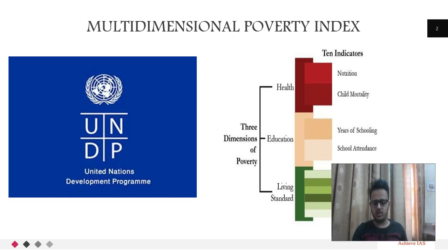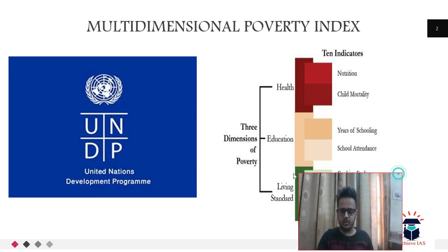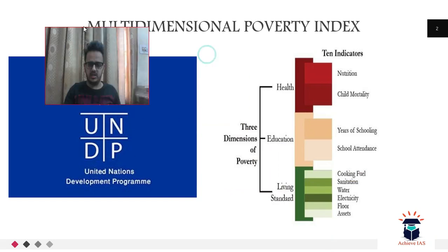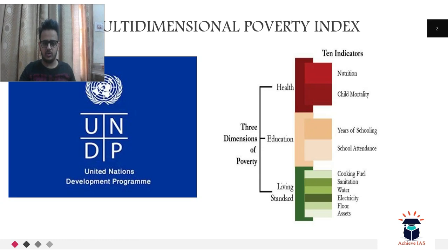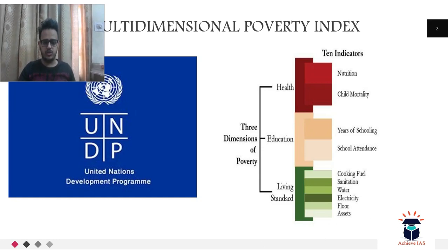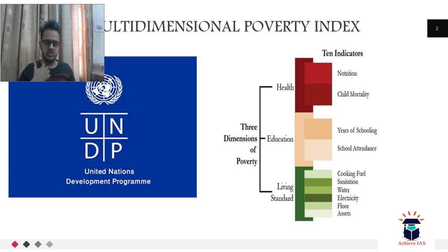The approach followed in the MPI looks at three key indicators: health, education, and living standards. Under health come nutrition and child mortality. Under education come years of schooling and school attendance. Under living standards come cooking fuel, sanitation, water, electricity, floor, and assets.